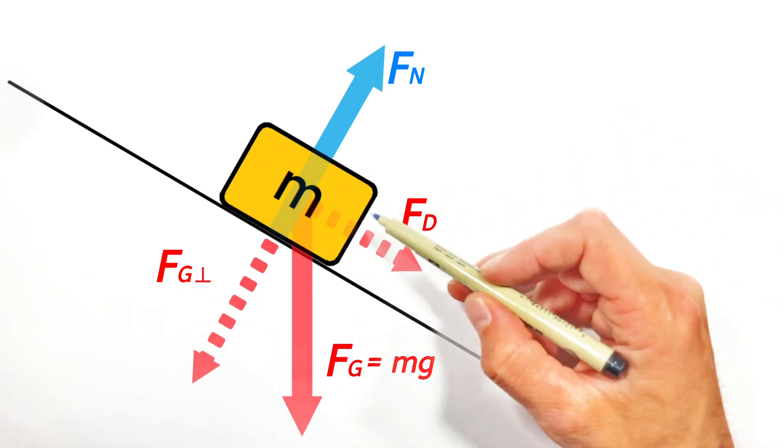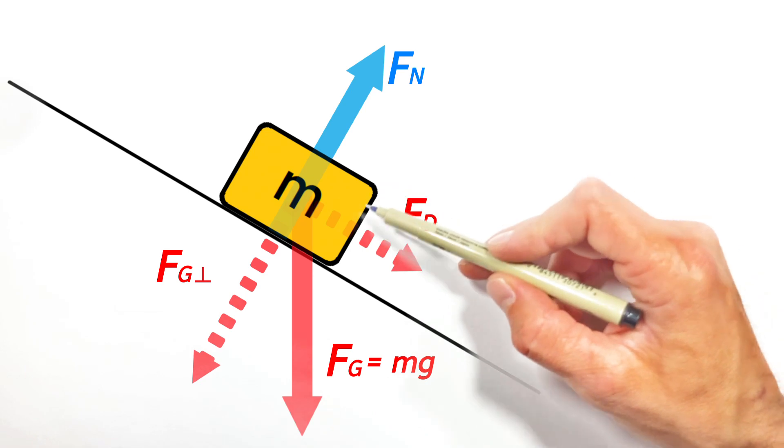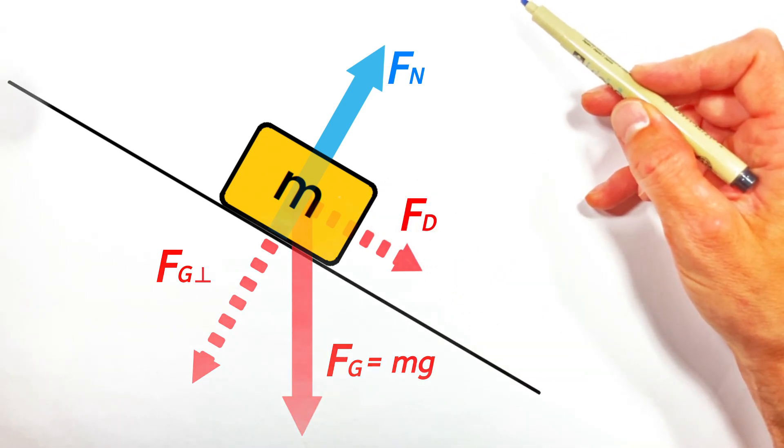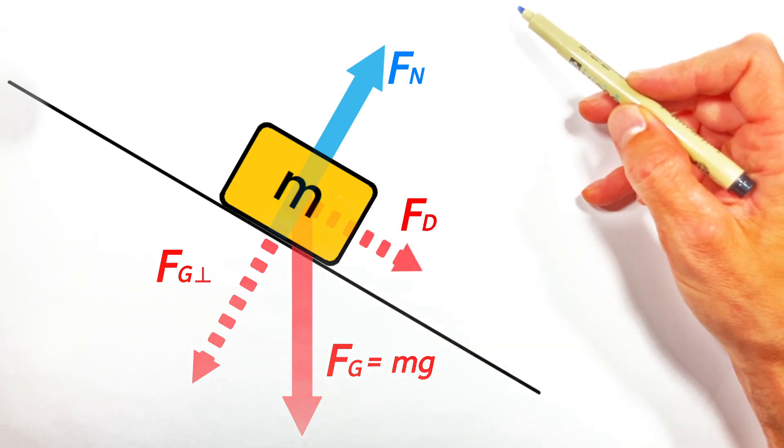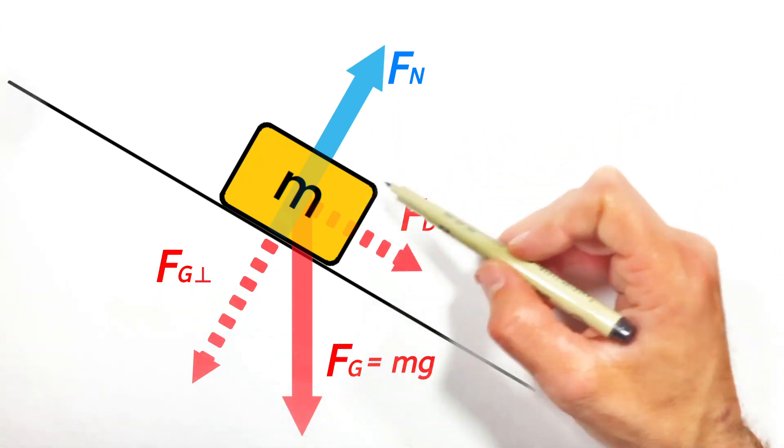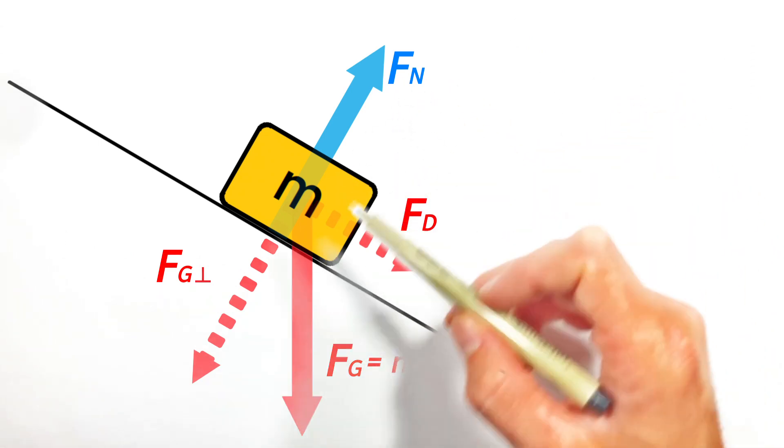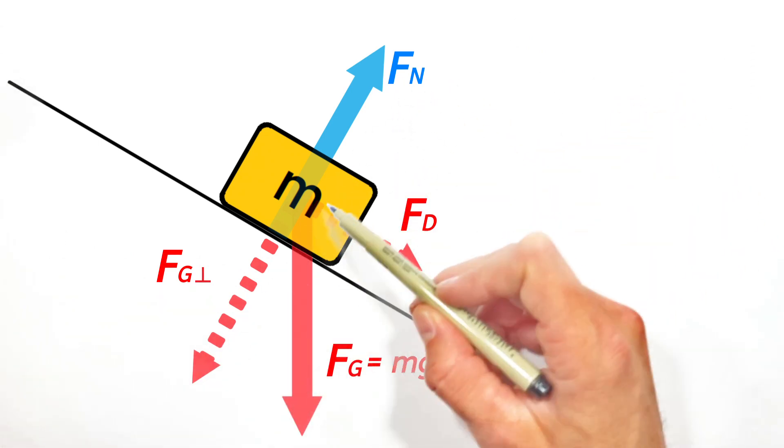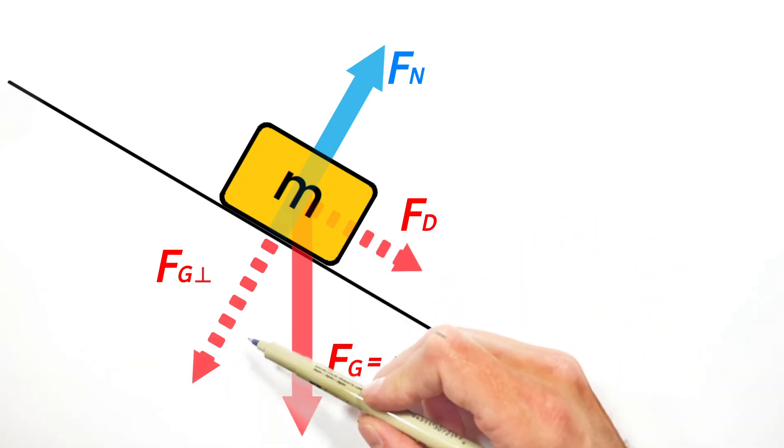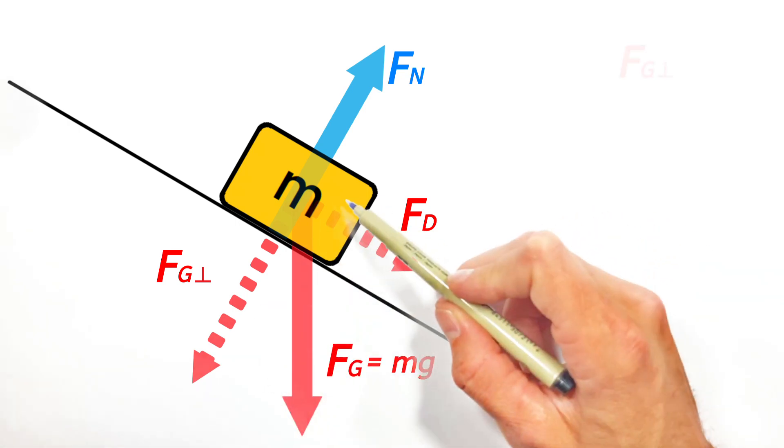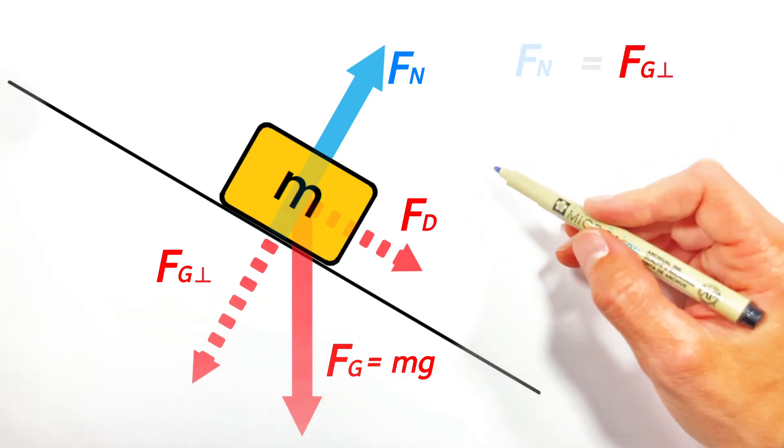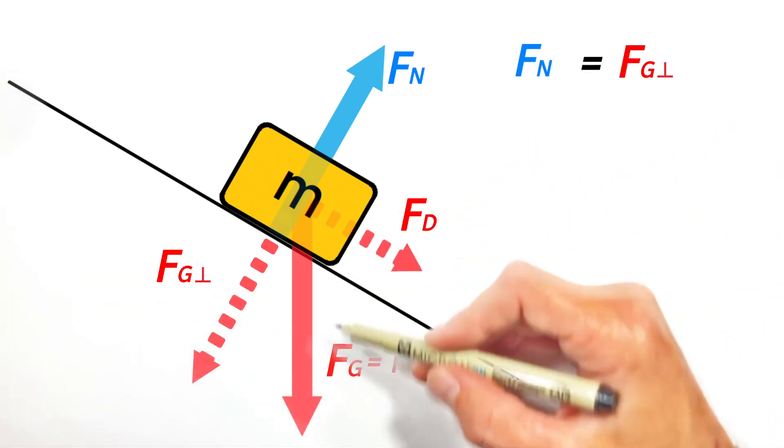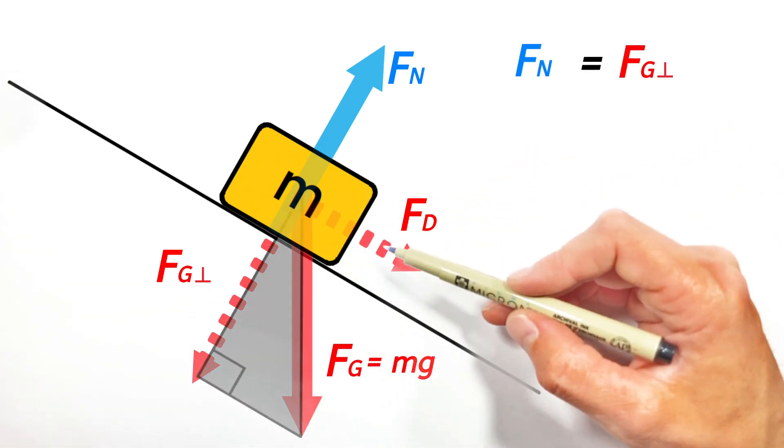You see, looking at this block right here, we know the block isn't going to take off this way and fly up off of the hill. And ultimately what that means is that this normal force is balanced out by this component of gravity which is acting down and to the left. Or mathematically, you could say this component is equal to Fn. And realize, ultimately what you're looking at right here is just a right triangle.